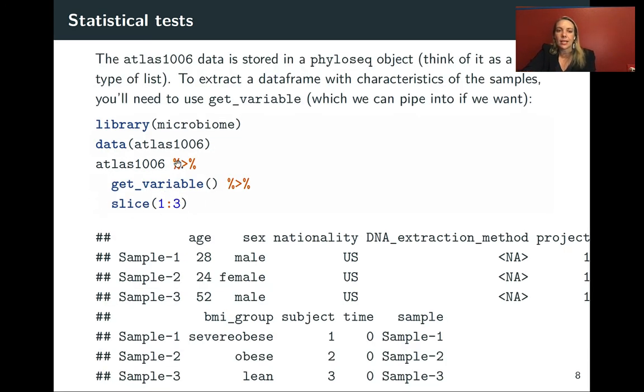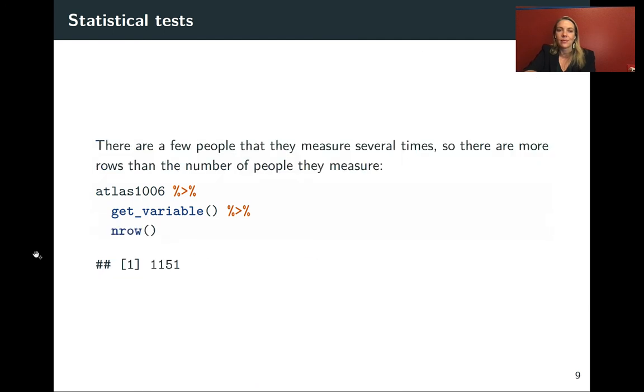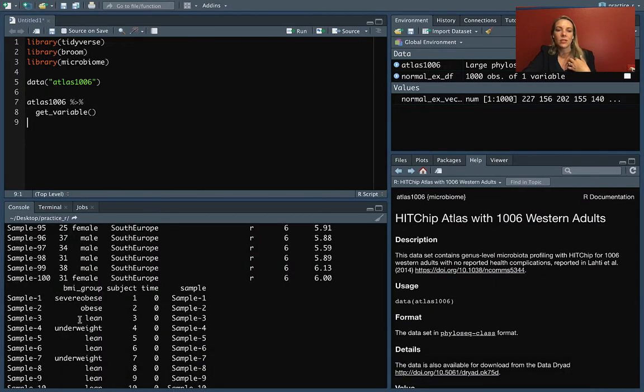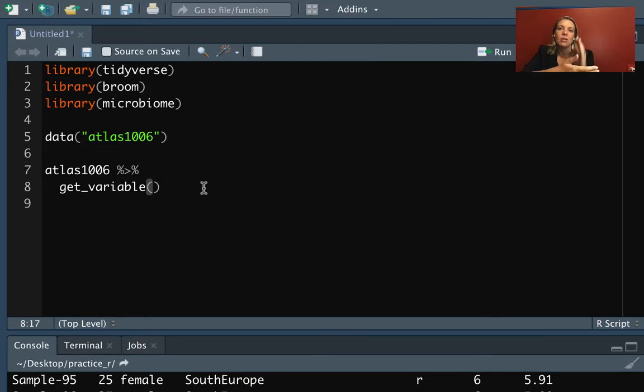So it might be helpful for us to get a good idea of whether it looks like it's normally distributed or not. This get_variable lets us pull out the information from the larger Atlas1006 data set. This pulls out as a data frame just the information about the different samples. If we look at the number of rows, we can see that it's more than 1006.